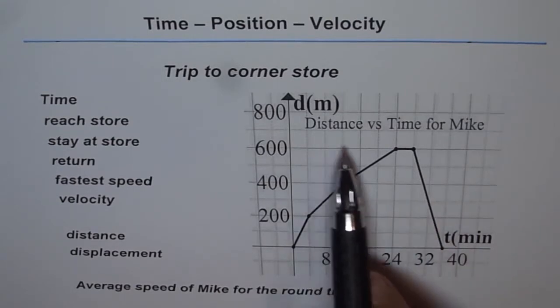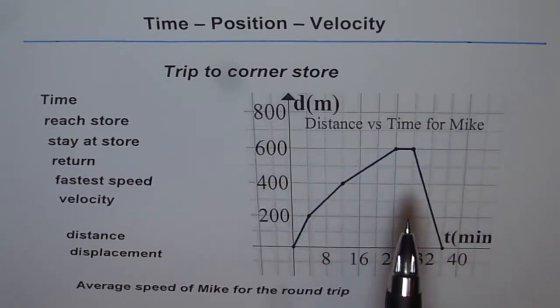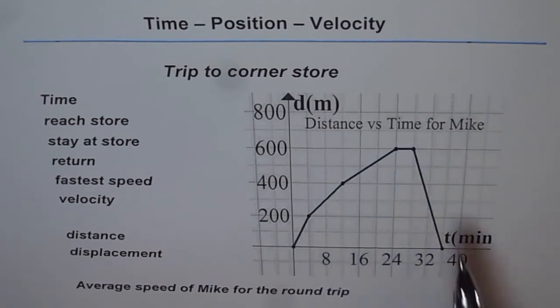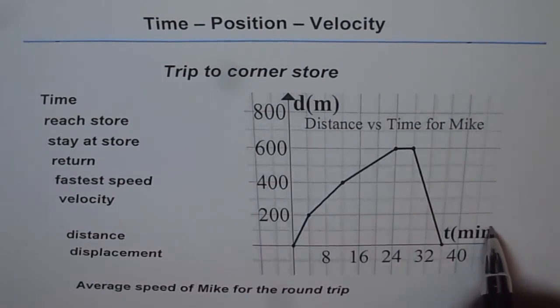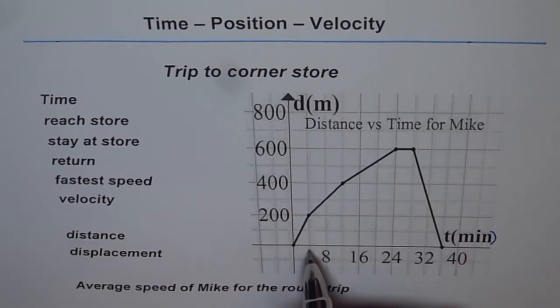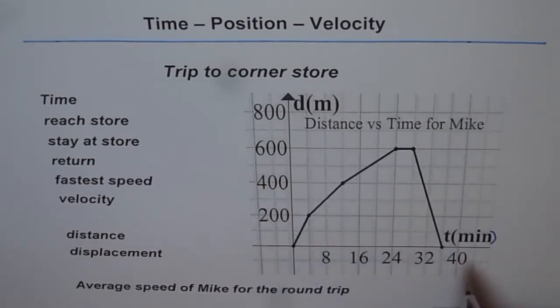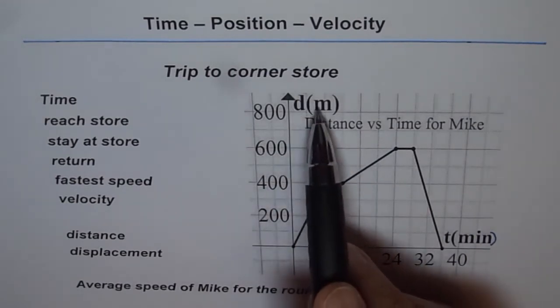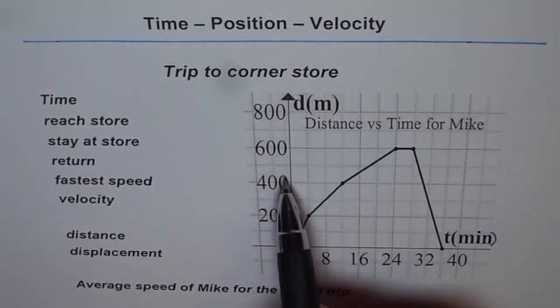Here we have a distance versus time graph. I've written distance versus time for Mike just to give you a story. Along the x-axis, the independent variable t is given in minutes. Each division is 4 units, so we have 4, 8, 12. On the vertical side we have distance in meters, the dependent variable.